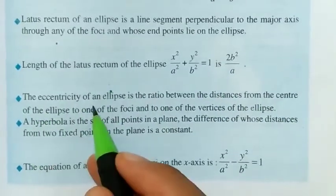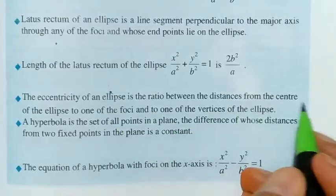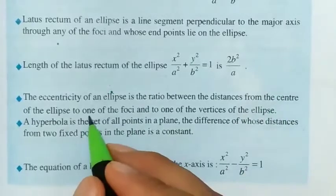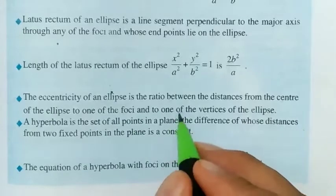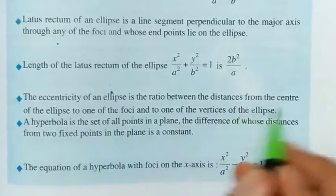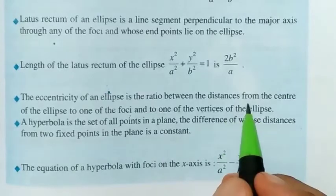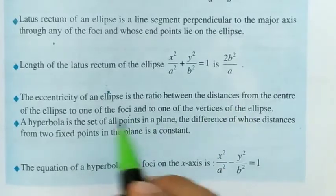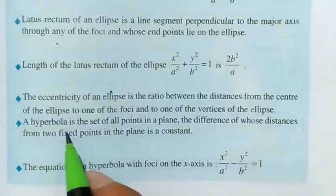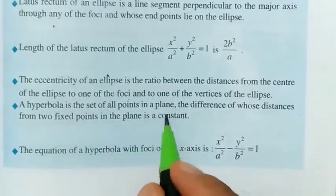The eccentricity of an ellipse is the ratio of the distance from the center of the ellipse to one of the foci, to the distance from the center to one of the vertices of the ellipse — that is, (center to focus) divided by (center to vertex).